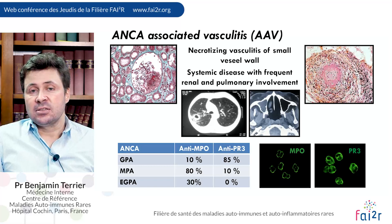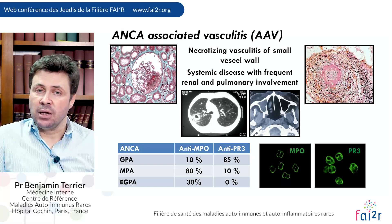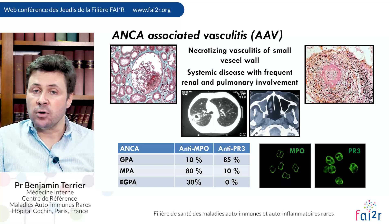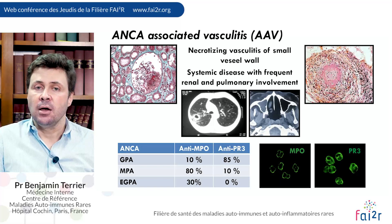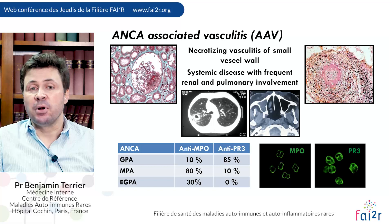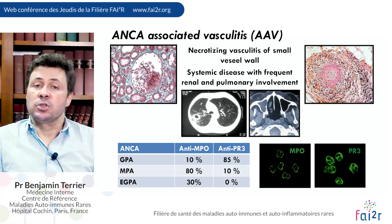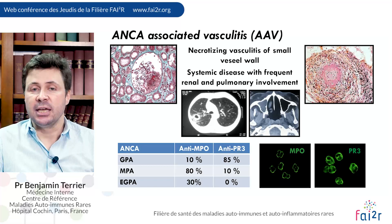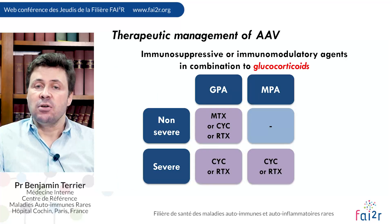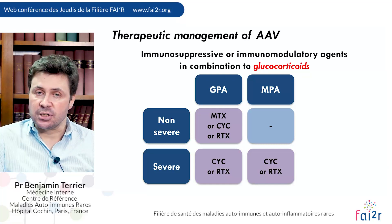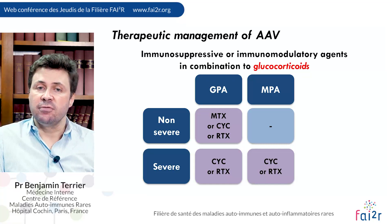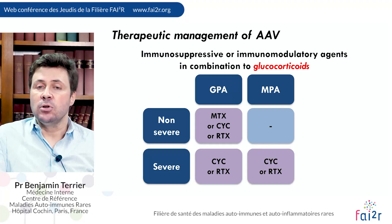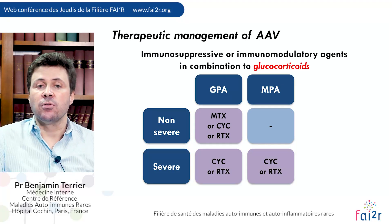The disease is associated with ANCA targeting either PR3, especially for granulomatosis with polyangiitis, or myeloperoxidase, especially for microscopic polyangiitis and eosinophilic granulomatosis with polyangiitis. The therapeutic management is based on the combination of glucocorticoids associated frequently with immunosuppressive or immunomodulatory agents.